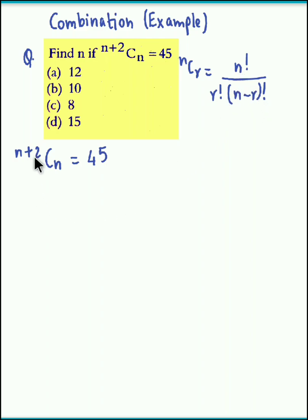So we apply this formula on the left hand side and we obtain n plus 2 factorial divided by n factorial times. Now the difference of these two, that is n plus 2 minus n, the whole factorial is equal to 45.